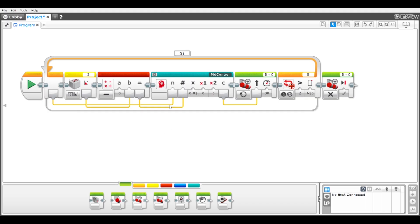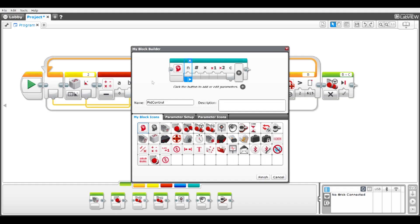I'll add feed forward to our PID Control MyBlock from our PID Control video. Selecting the edit icon on the PID Control MyBlock opens the MyBlock Builder tool. I'll use it to change the name of the MyBlock to PID Control with feed forward.